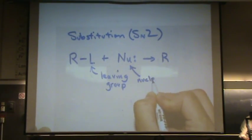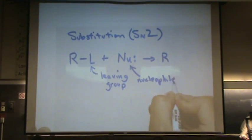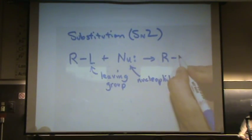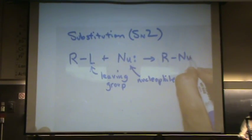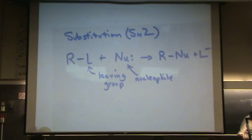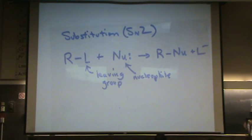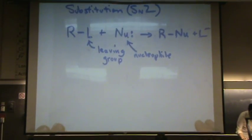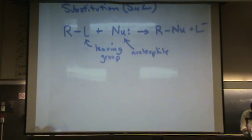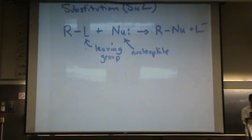The nucleophile substitutes for the leaving group, and the leaving group will leave. There are a lot of details that go into this reaction that we won't look at, but just know you're looking for a nucleophile — something with a lone pair of electrons.